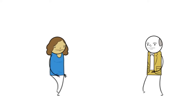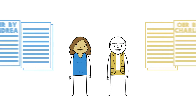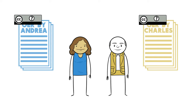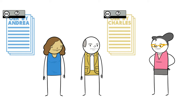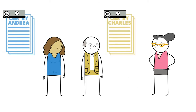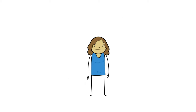This is Andrea and Charles. They are each developing their own chapters of an open textbook to be licensed separately. When they have questions about which license to use, they ask Beth, the scholarly communications librarian. Beth is considered the leading expert on campus in Creative Commons licensing. Most people think she's pretty cool, and Andrea and Charles would agree.